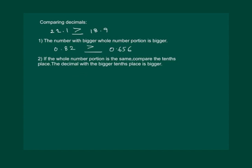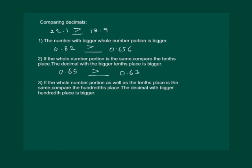Let us see what will happen if the tenths place is also the same. Say we have 0.65 and 0.63. If the whole number place is the same and the tenths place is also the same, then compare the hundredths place. The decimal with the bigger hundredths place is bigger, so 0.65 is bigger than 0.63. The third rule: compare the hundredths place when both the whole number portion and the tenths place are the same.